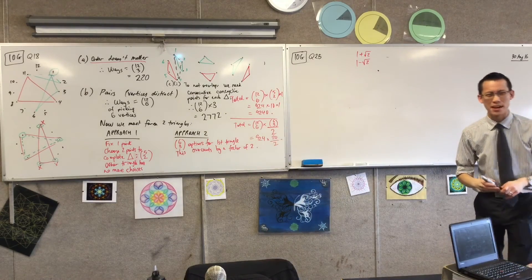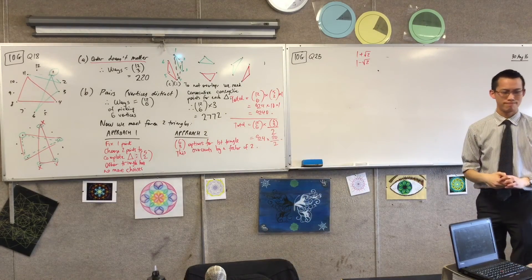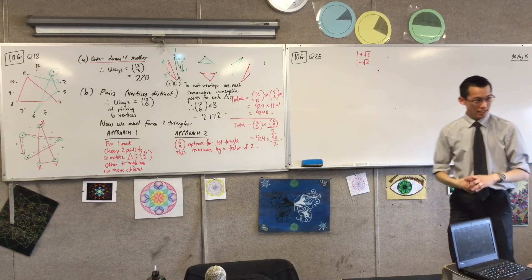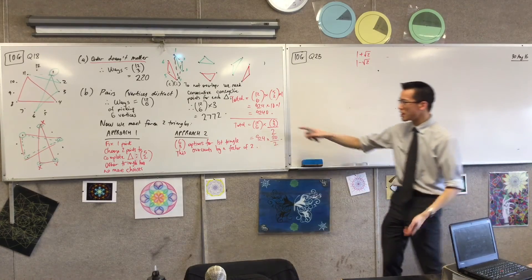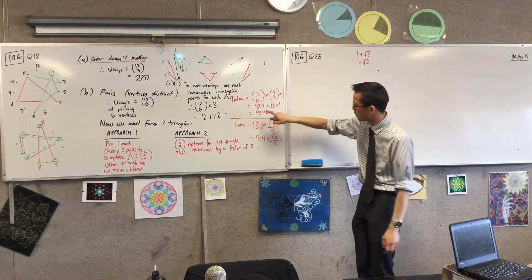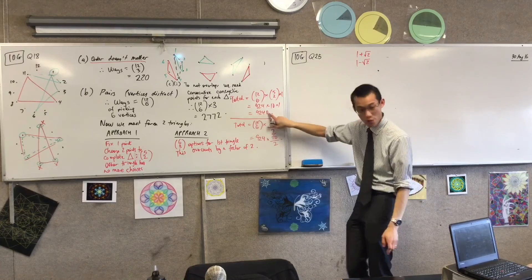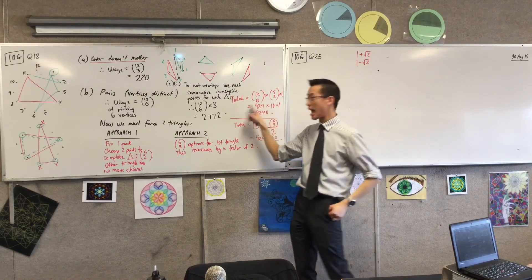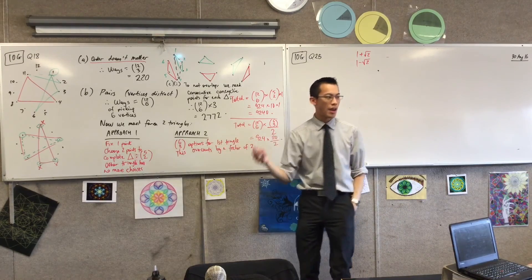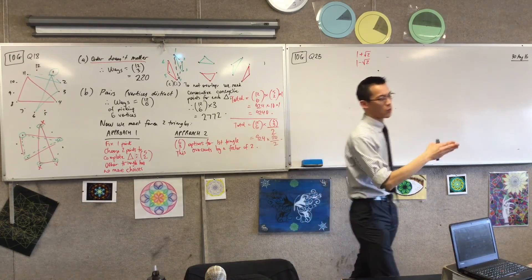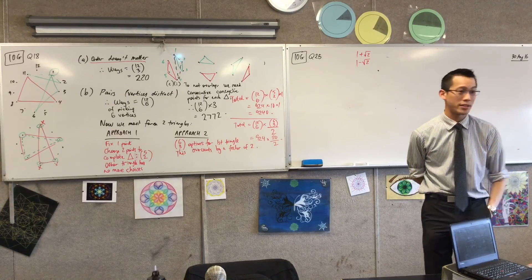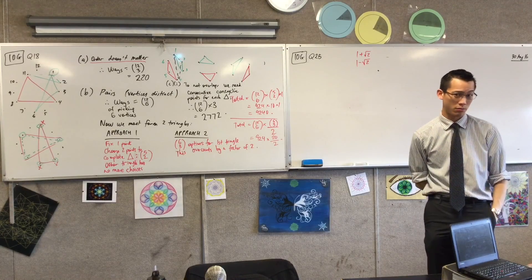For part C(ii) — overlapping triangles — we don't need to start from scratch. It's 9240 minus all the non-overlapping ones: 9240 − 2772 = 6468. Every single other pair must overlap, so that's the answer to the second part.